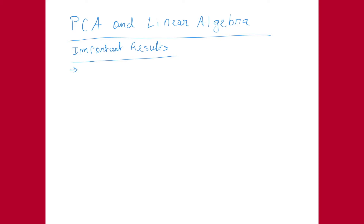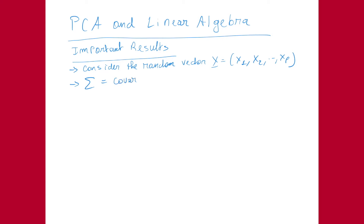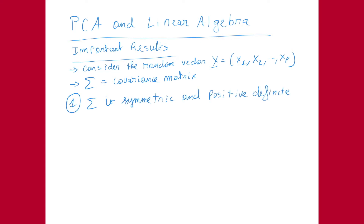We start with a random vector — in my notation vectors are always row vectors. We have a row vector x with components x1, x2, all the way to xP. Then Sigma is the covariance matrix. The first important result is that the matrix Sigma is symmetric and positive definite.